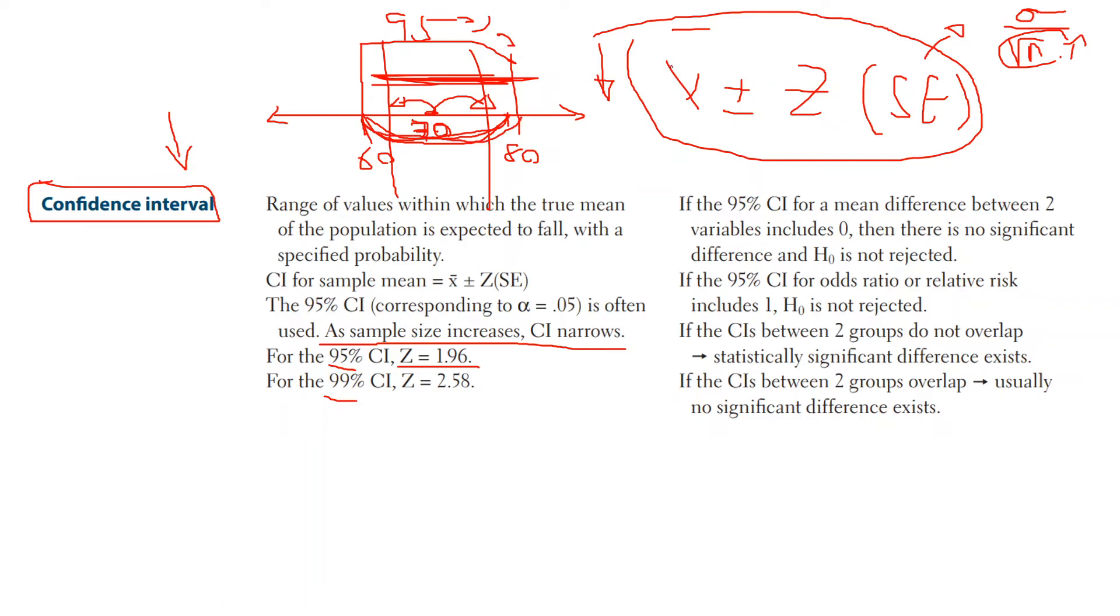So again, to find the confidence interval, you add the sample mean to z times standard error, and then you do the sample mean minus z times standard error. Those two points will give you the two points of your confidence interval. And based on if you use the z of 1.96, then you are 95% sure where the population mean is, where the true population mean is. And if you use the z of 2.58, you are 99% sure where the true population mean is.